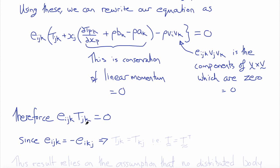And now if we recognize that Eijk is equal to the negative of Eikj, which we get by switching the indices k and j, then that would suggest that the only way that this could all sum to zero is if TjK is equal to Tkj.